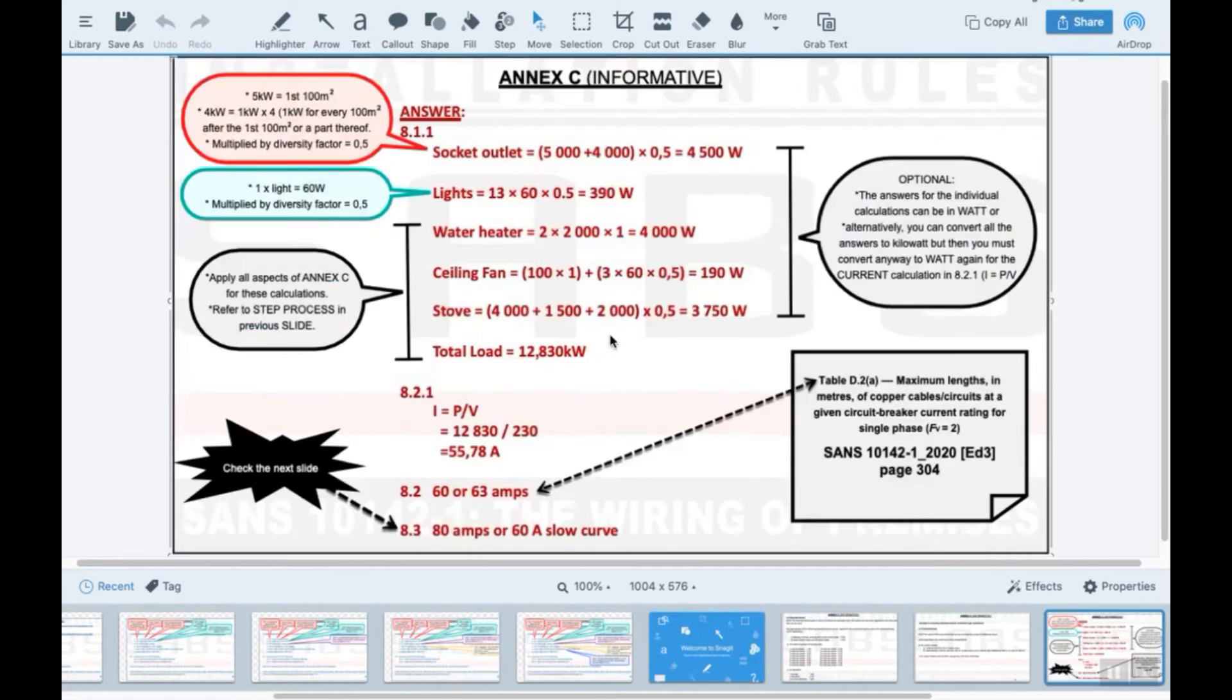You need to add that. Here I give you the notes, giving you every step. It says the ceiling fan motor, refer to the annex, and for the three lights follow the steps above in green here. Diversity factor would be 0.5. That would take us to this over here: that is your ceiling fan, which is a motor, diversity factor is one. Three by 60 watts, diversity factor 0.5. You add it and you get 190 watt.